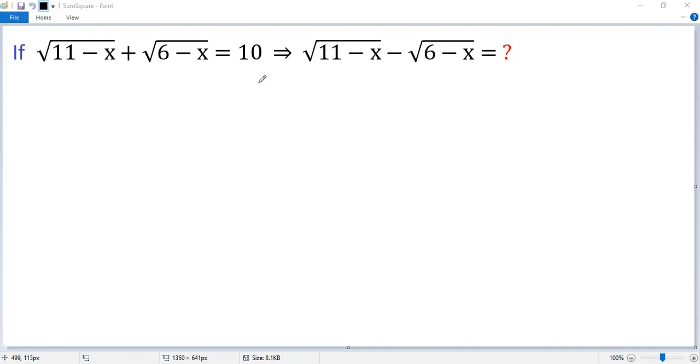A naive way to solve this problem would be to move one square root from the left side to the right side and then square, then collect like terms and square again. You can eliminate square roots this way, but it is time consuming.